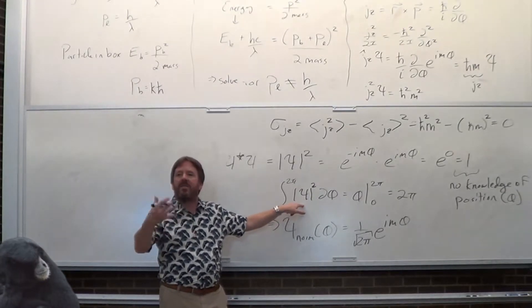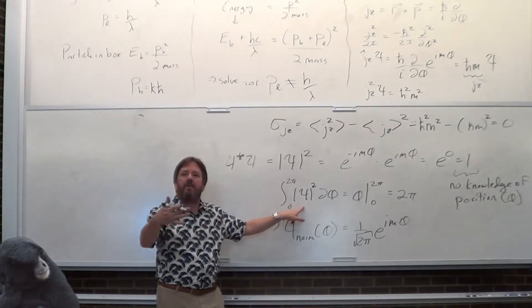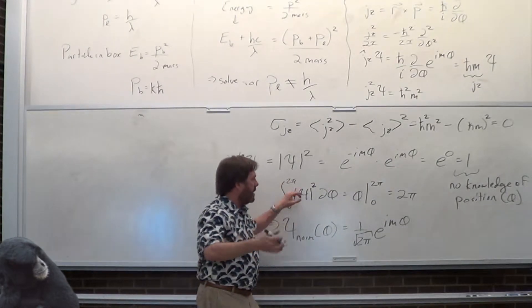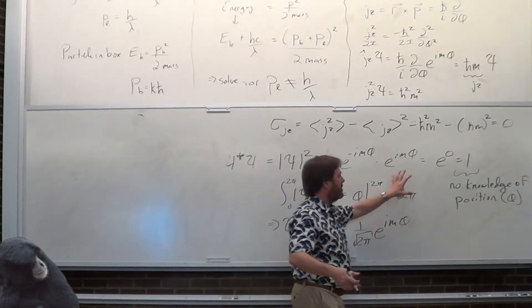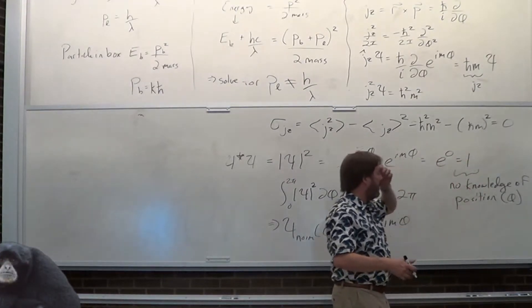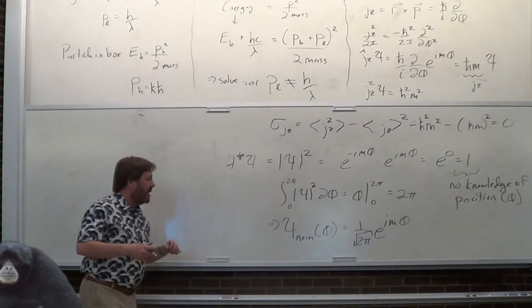So you see why there's no knowledge of the angle in the 2D rotor: the angle isn't there after squaring. But in particle in a box, when the uncertainty principle is active, the x is still there after squaring — it works for particle in a box but not for a free wave or a 2D rigid rotor.